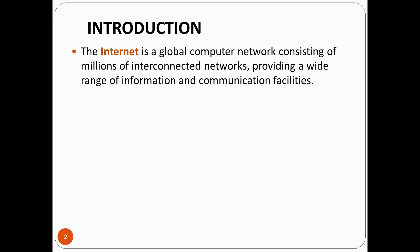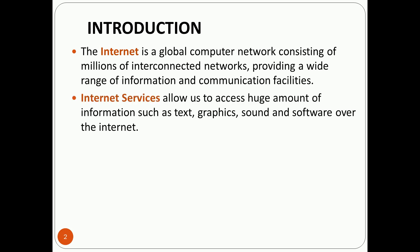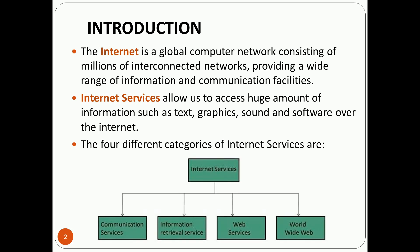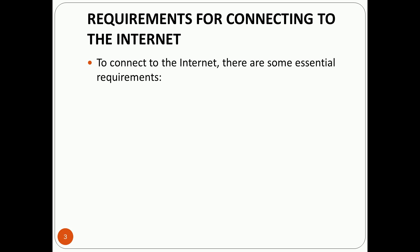The internet is a global computer network consisting of millions of internet-connected networks, providing a wide range of information and communication facilities. Internet services allow us to access a huge amount of information such as text, graphics, sound, and software over the internet. The four different categories of internet services are: communication services, information retrieval services, web services, and worldwide web.